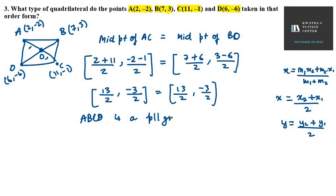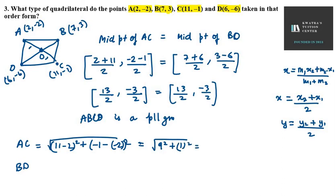Now let's know if this is square or rectangle. For that, you need to find if the diagonals are equal or not. You have to find AC and BD. AC can be found using the distance formula. You will get square root of (11 minus 2) whole square plus (minus 1 minus minus 2) whole square. So you get 9 square and 1 square. It will be 81 plus 1, which is square root of 82.